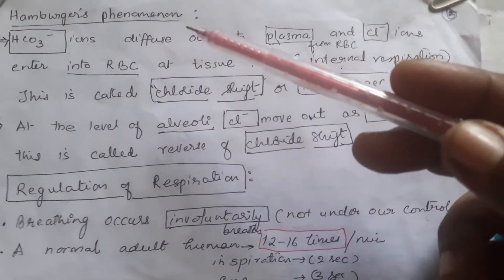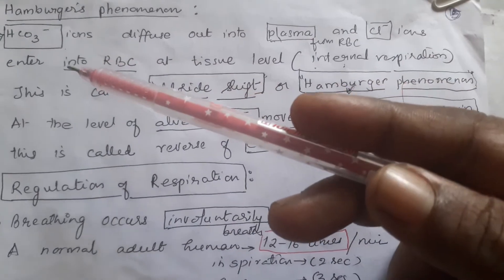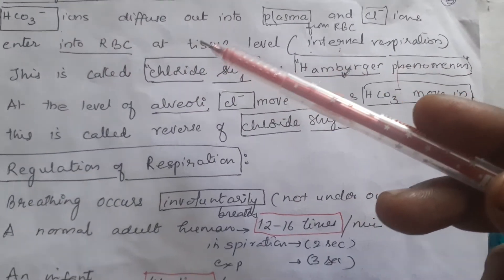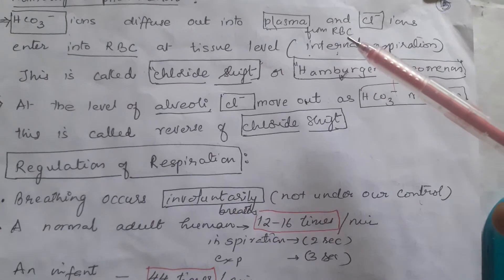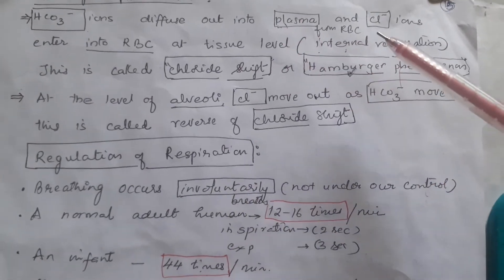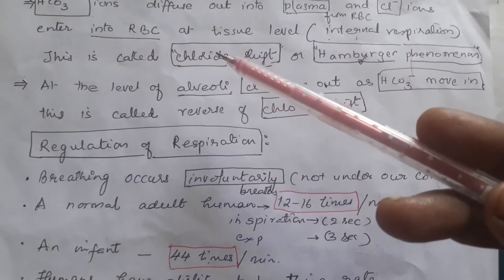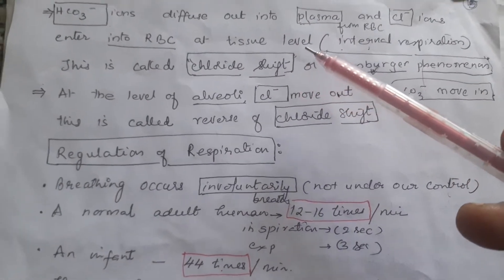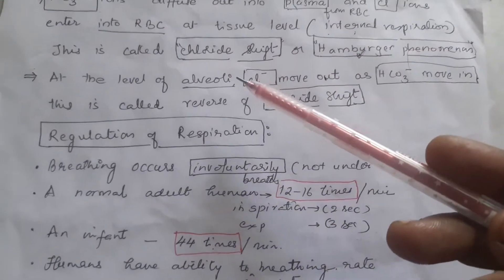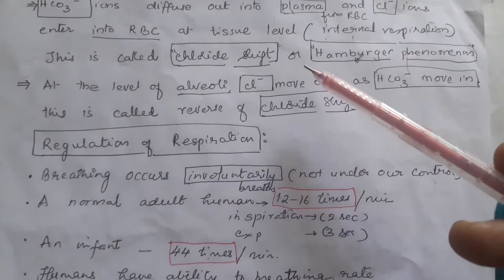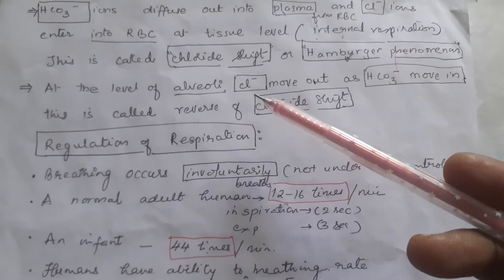What is Hamburger's phenomenon? When bicarbonate ions diffuse out into plasma from RBC, to replace them, chloride ions will enter into RBC at tissue level — that means during internal respiration. This is called chloride shift, which is also called Hamburger's phenomenon.